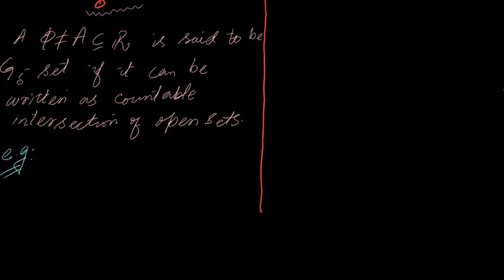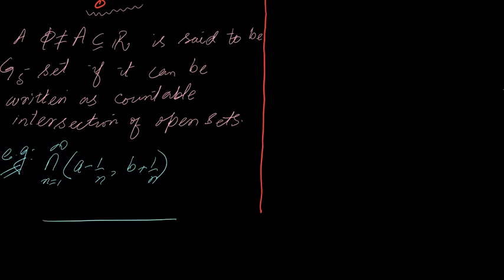For example, consider a countable intersection of open intervals of the form (a minus 1 over n, b plus 1 over n). On the number line, a minus 1 over n is to the left of a, and b plus 1 over n is to the right of b. As n approaches infinity, the intervals will squeeze and converge to the closed interval [a, b].